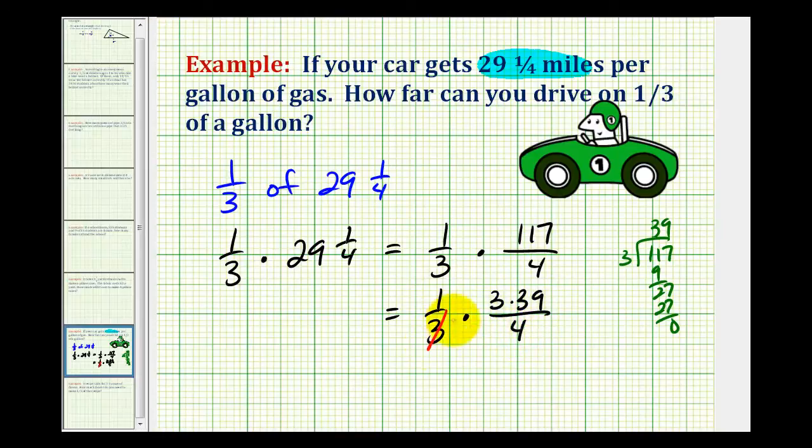Notice how the threes simplify out. And then when we multiply, we have one times thirty-nine, that's thirty-nine, and we have four in our denominator.